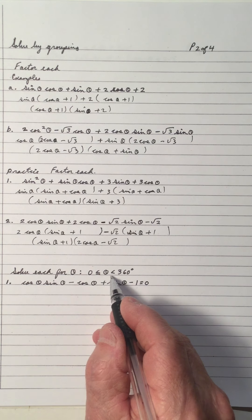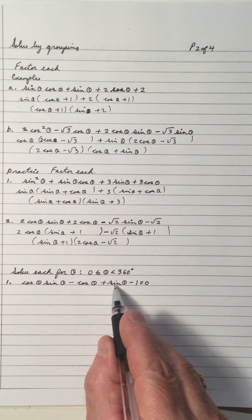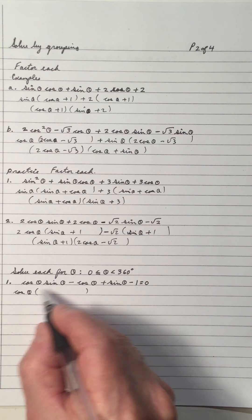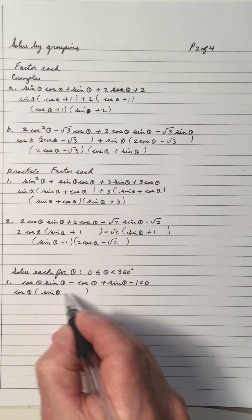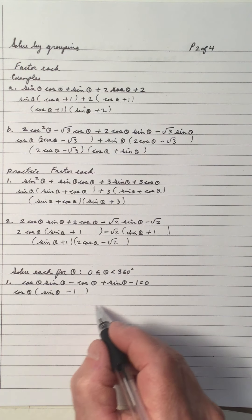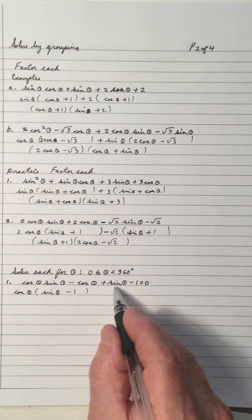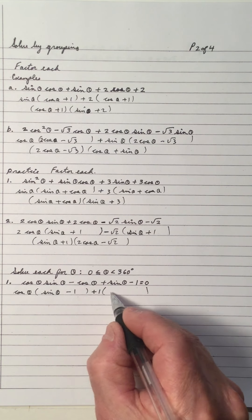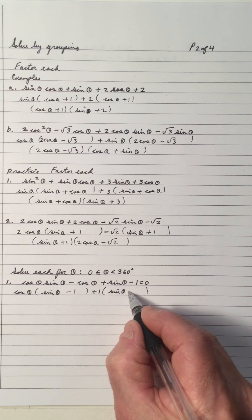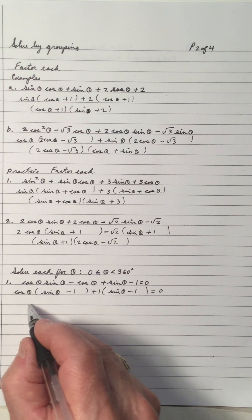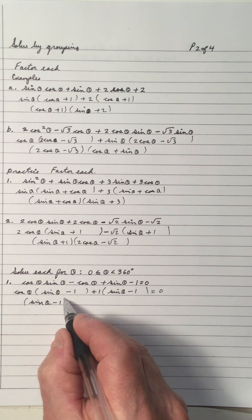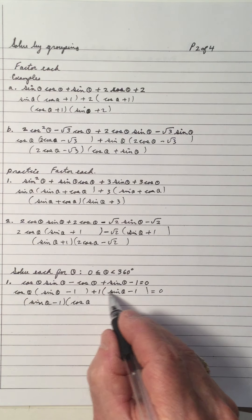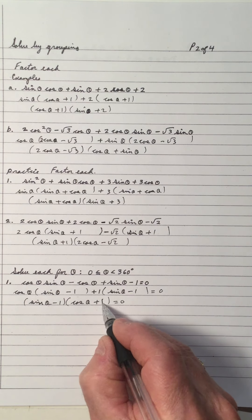Solve for theta, zero is less than or equal to theta, less than 360. We have four terms. In the first two I see a cos theta, so cos theta sine theta divided by cos theta is sine theta, and negative cos divided by cos is negative one. Notice this binomial expression here is the same as here, so I'm going to take a plus one — one is always common. Sine theta divided by one is sine theta, and negative one divided by one is negative one.